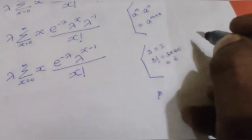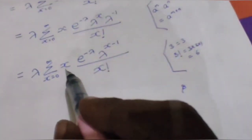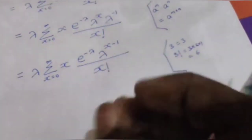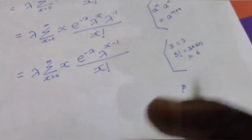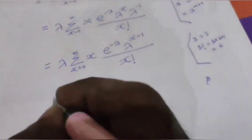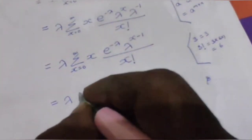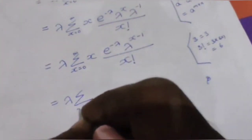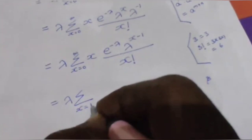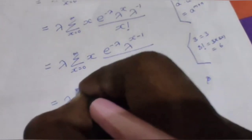So x is eliminated by cancellation. We factorize x so that x cancels with the x in x factorial. The limit changes: since the x equals 0 term vanishes after cancellation, the summation now starts from x equals 1 to infinity, with lambda factored out.